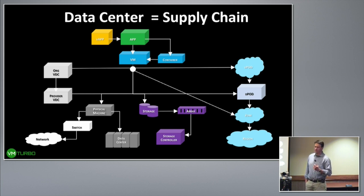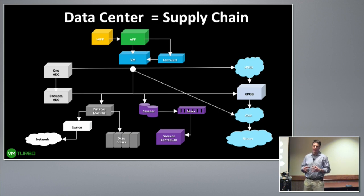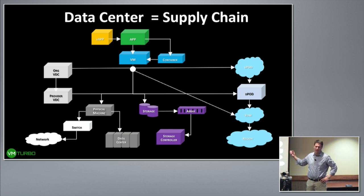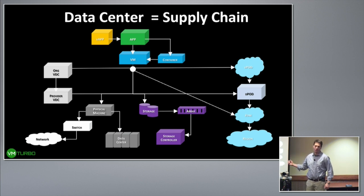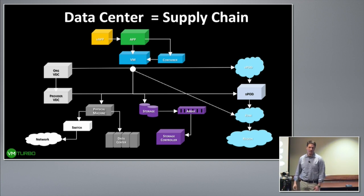Ultimately, our goal is to assure application performance. We abstract everything in the data center into a common data model and represent it as a supply chain — at the top, the applications where transactions are going up, consuming from the virtual machines, from containers, moving down into the storage layer, into fabric, out into public cloud resources, and leveraging the network. That is the core of VMTurbo and how the control platform makes decisions.